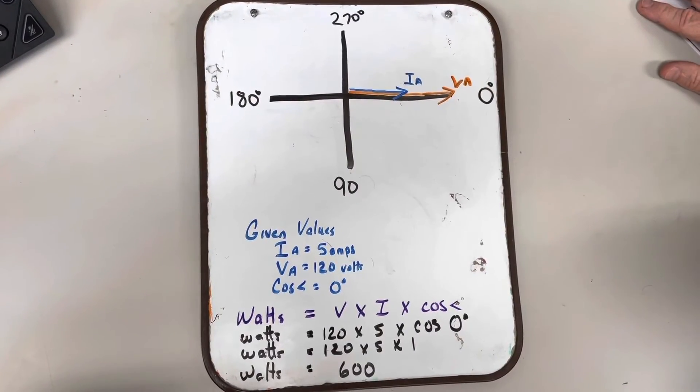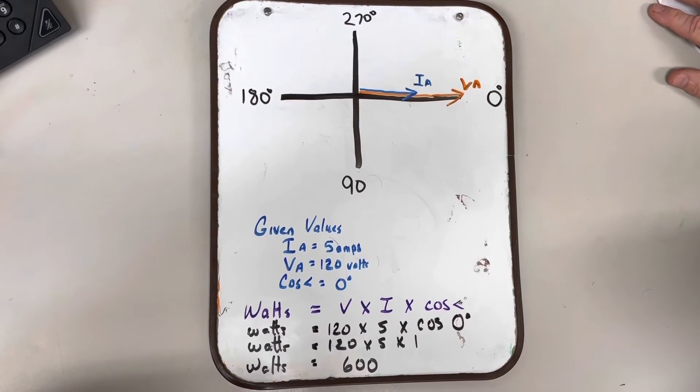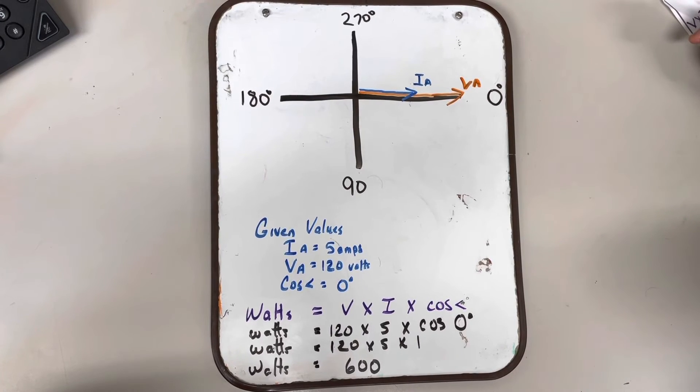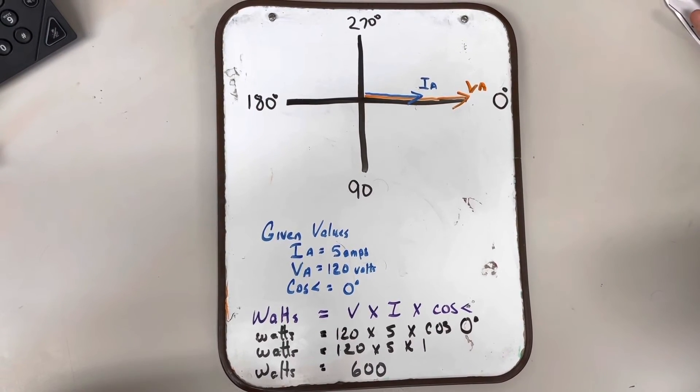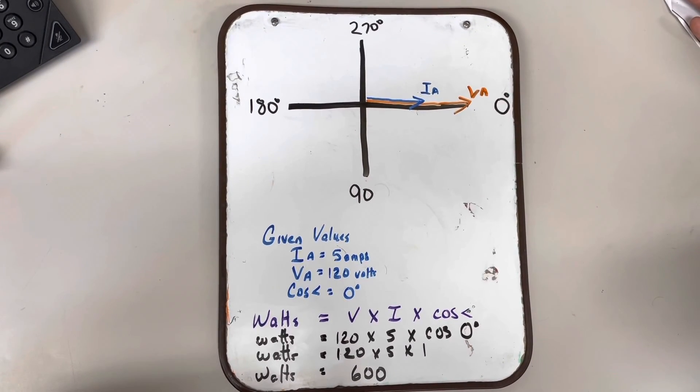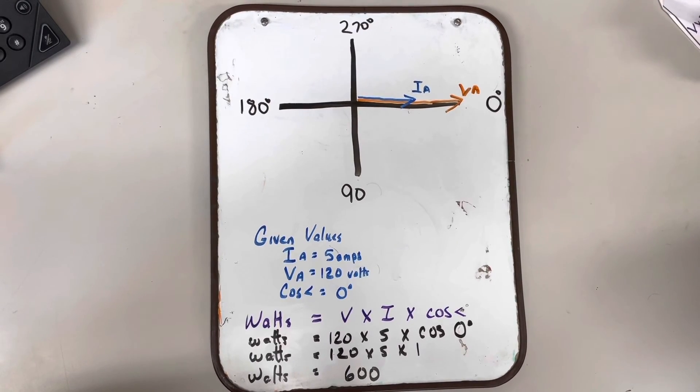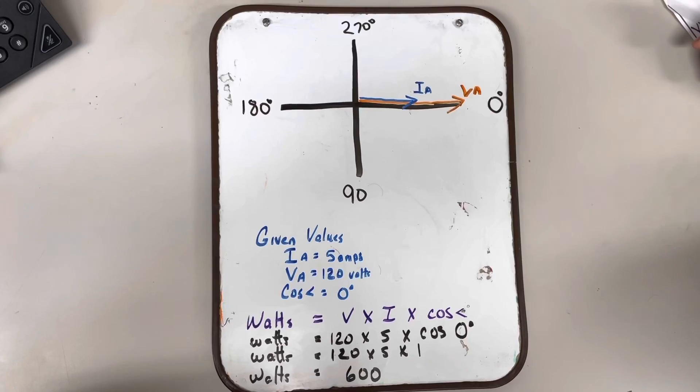Here's an example of the single phase two wire meter that we were discussing earlier. And this is a purely resistive load where the voltage and the current are at zero degrees. With the given values, we need to figure out watts. And the formula for watts is volts times amps times the cosine of the angle. After totaling this up, the load at that single phase two wire meter is 600 watts.